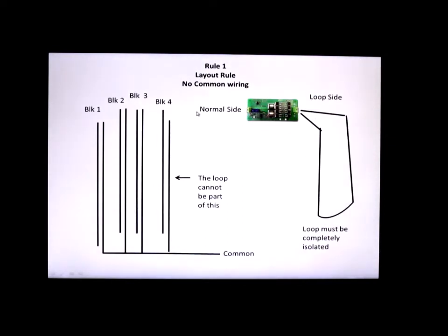Over here you can see the loop has got to be completely isolated from the rest of the layout. Just for discussion purposes, the left side which can be part of a common circuit is called the normal side and the loop side or the reverse loop is called the loop side. So that's the first rule. If you don't follow this rule you're not going to get to first base real quickly. I have tried it both ways and it sometimes works with the loop being part of the common circuit, but most often it doesn't work. So if you follow this rule you should be all set.